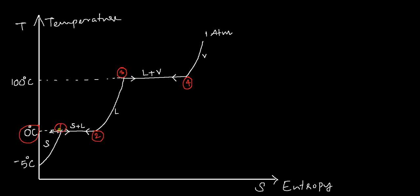Similar to the condition from 1 to 2, during 3 to 4, as you add heat to the saturated liquid at 3, the phase change process will start. However, the temperature of this process will remain at 100°C. There will be no increase of temperature until the whole liquid is converted to vapor, or saturated vapor, at point 4. The liquid saturation is that point from where, as soon as you start to add heat to the saturated liquid, it will start the formation of vapor.